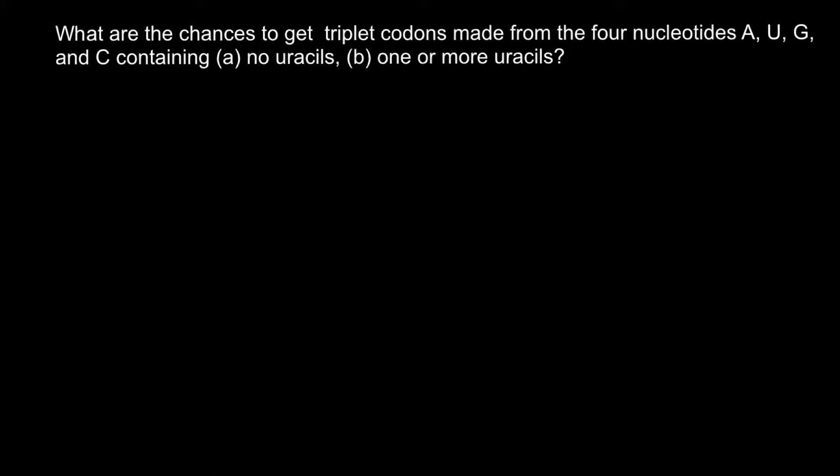This video is going to be about probability in genetics. Today's problem is: what are the chances to get triplet codons made from the four nucleotides adenine, uracil, guanine and cytosine — containing A) no uracils, and B) one or more uracils.